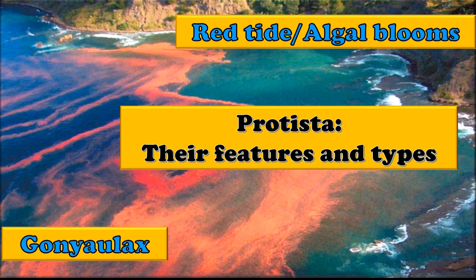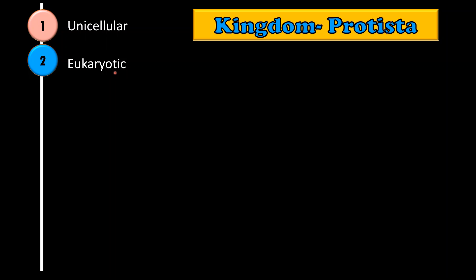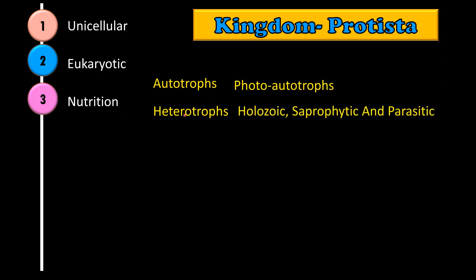These organisms are unicellular and eukaryotic in nature — that is, they show a distinct nucleus and other membrane-bound cell organelles. They show autotrophic as well as heterotrophic modes of nutrition. Autotrophic organisms are photosynthetic in nature, whereas heterotrophic organisms show huge diversity such as holozoic, saprophytic and even parasitic.